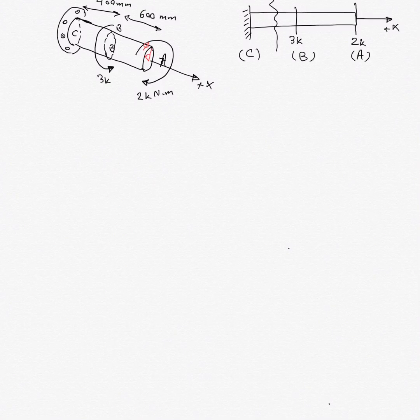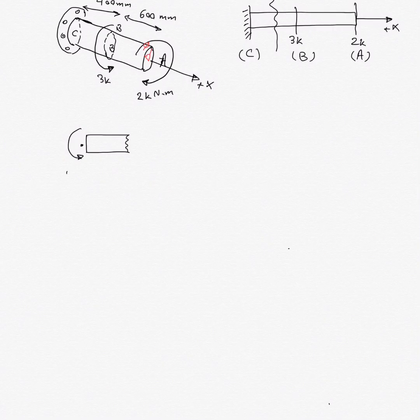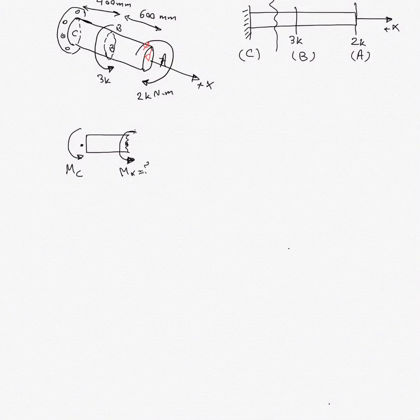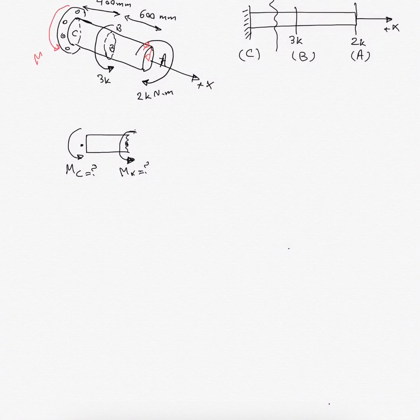Let's work first on the section between C and B. I make a cut there; the torque in the wall is M_C, and the torque at the cut cross-section is M(x) shown positive. Since M_C is currently unknown, before solving the cut sections I need to solve for the wall reaction. Taking the entire system as the free body diagram, I apply moment equilibrium.